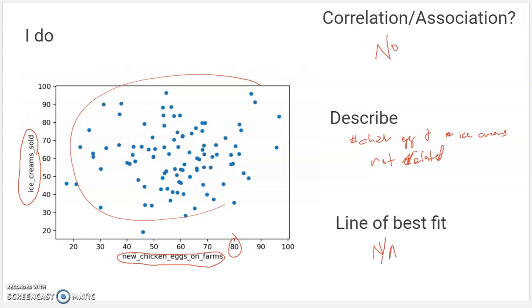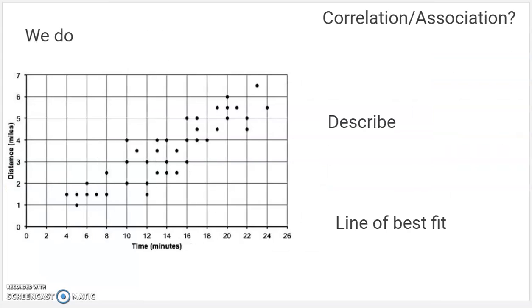So there is no line of best fit. It's not possible to make a line of best fit if the data don't work. Here's the one I want us to do together. This is our taxi problem that we have been looking at for a few days, and you probably have a copy of it already in your notebook somewhere. So looking at this, is there a correlation? Is there an association between the amount of time and the distance driven on these taxi rides? There is.